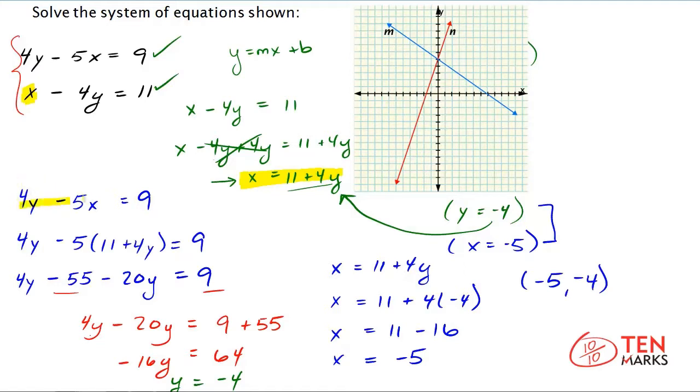So once you get your equation you substituted it into the other equation that you have in the system. So I substituted in the expression 11 plus 4y for x. And then I simplified so that I could get down to solving for y. And I solved for y.